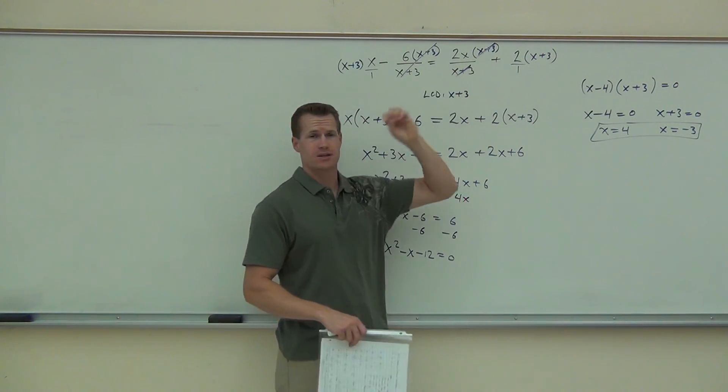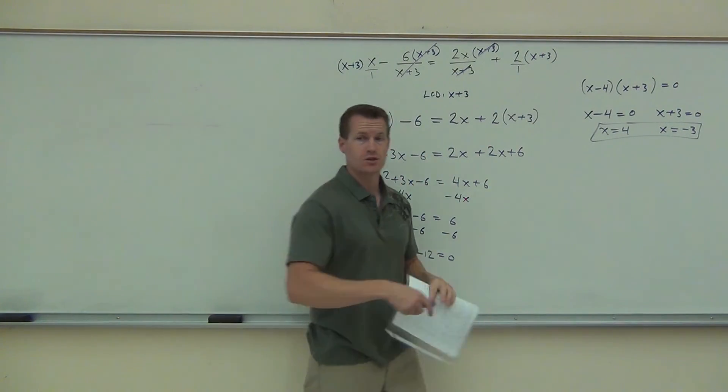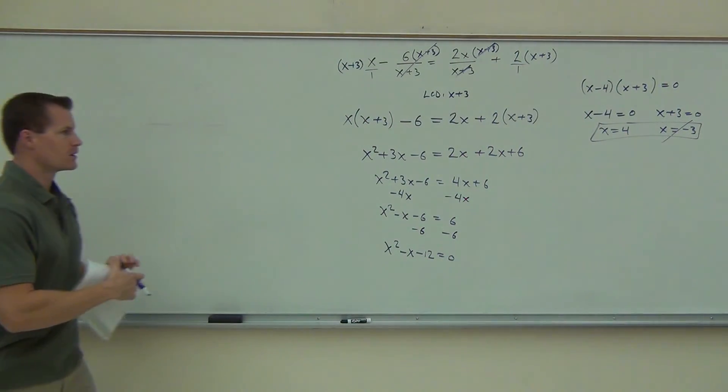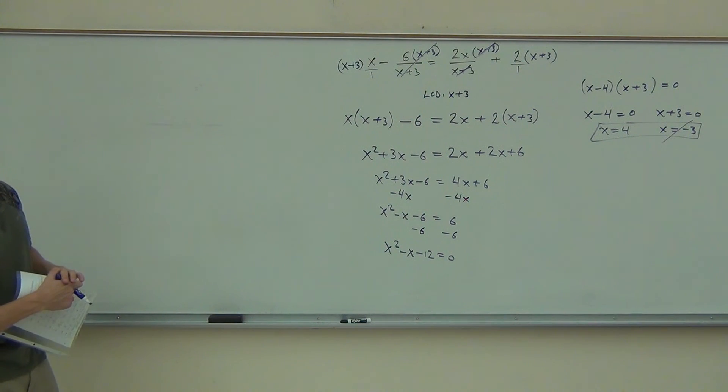I get 0 on the denominator. That's not a good thing. So you do have to cross that one out. Yeah, we only get one solution there. Good call. Thank you. Okay, anything else that we've done up there? Thank you.